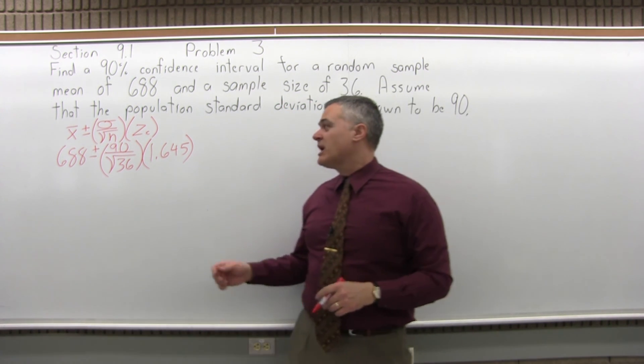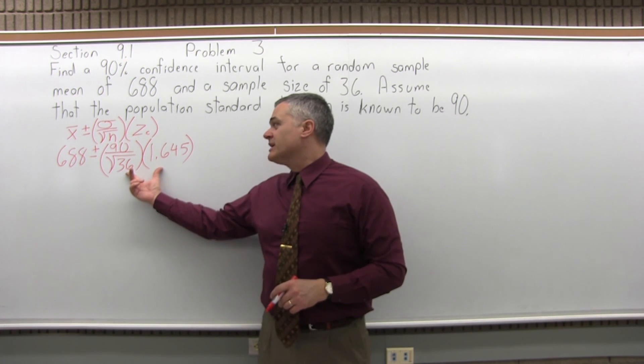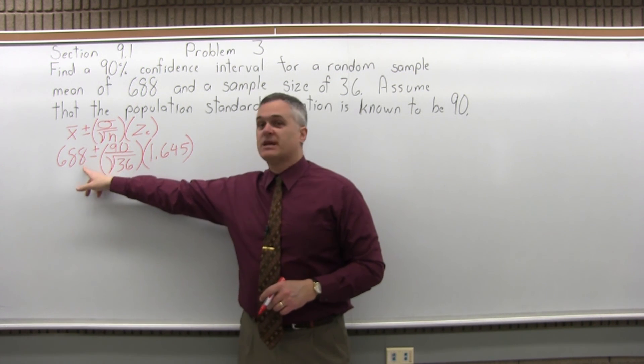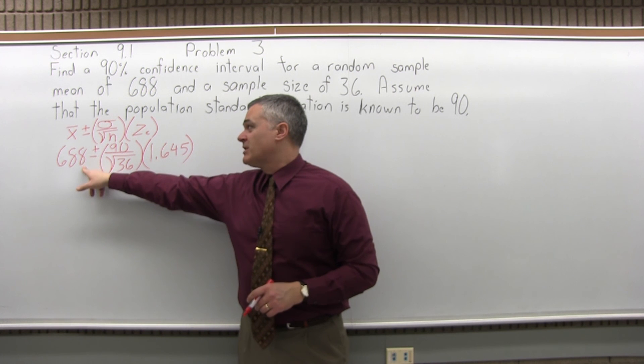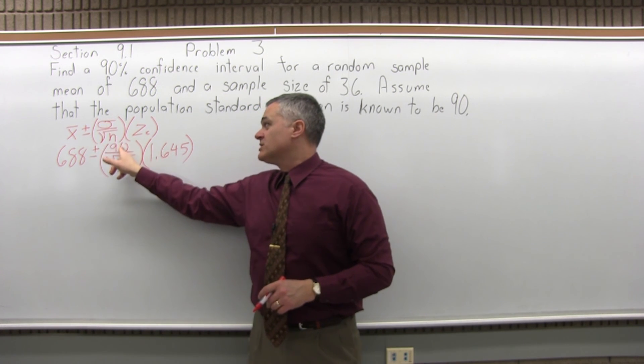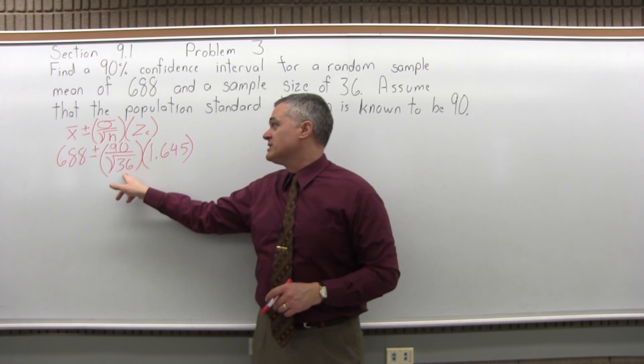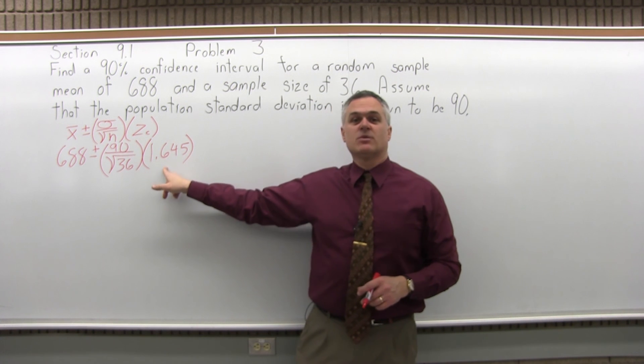So that's how the formula fills in. If you fill it in correctly and you take your time, most likely you'll get the right answer. But this is a very important step to fill it in correctly. X bar is 688, standard deviation is 90, sample size is 36, confidence coefficient is 1.645.